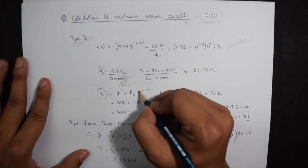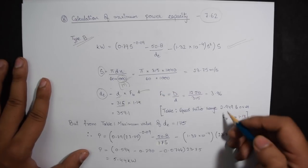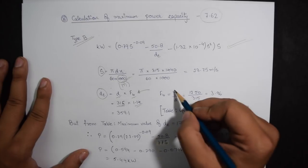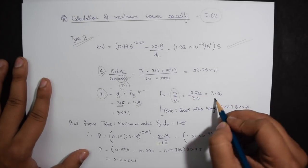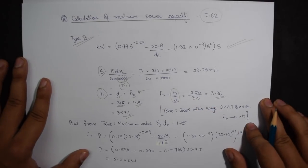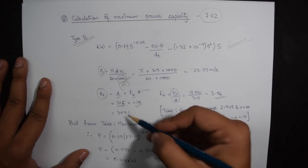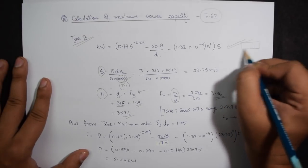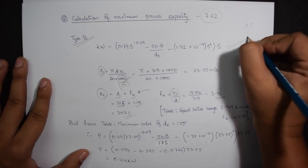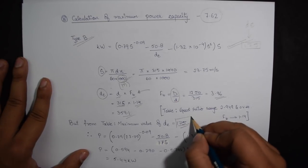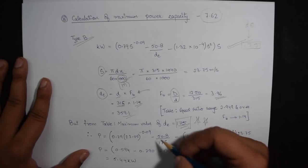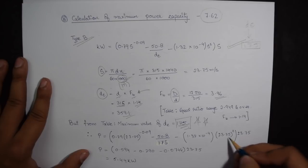Calculation for DE as given on page 7.62 only is DP into FB. So DP is the smaller diameter which is 315 mm and FB can be calculated as capital D by small d which comes out to be 3.96. Multiplying these two we get the answer as 359.1 but right next to the formula we have the maximum value of DE to be used in the formula as 175. So ignoring 359.1 we will be choosing DE as 175. Putting both the values of S and DE into the formula we get power as 5.44 kilowatt.